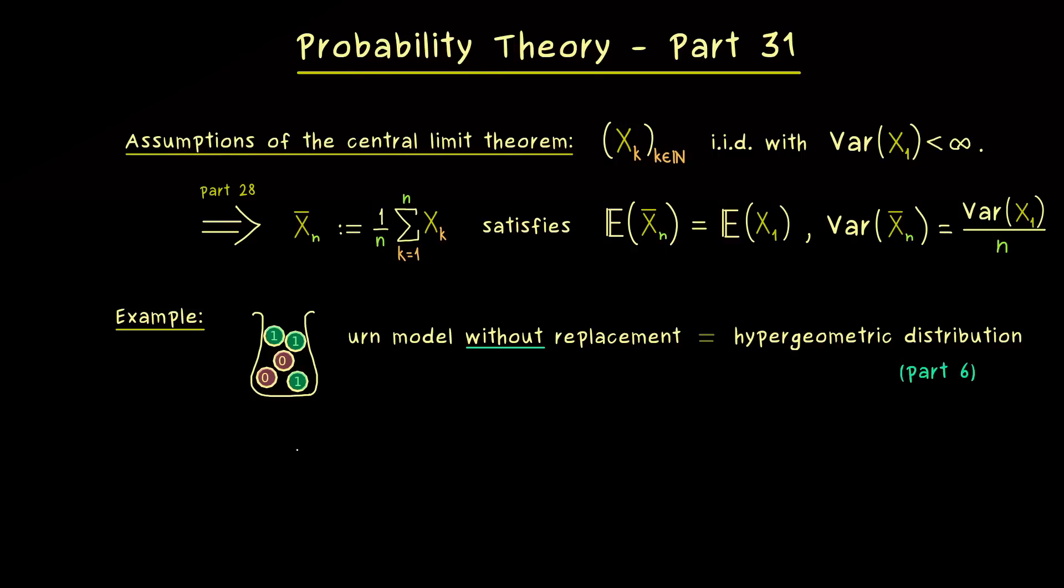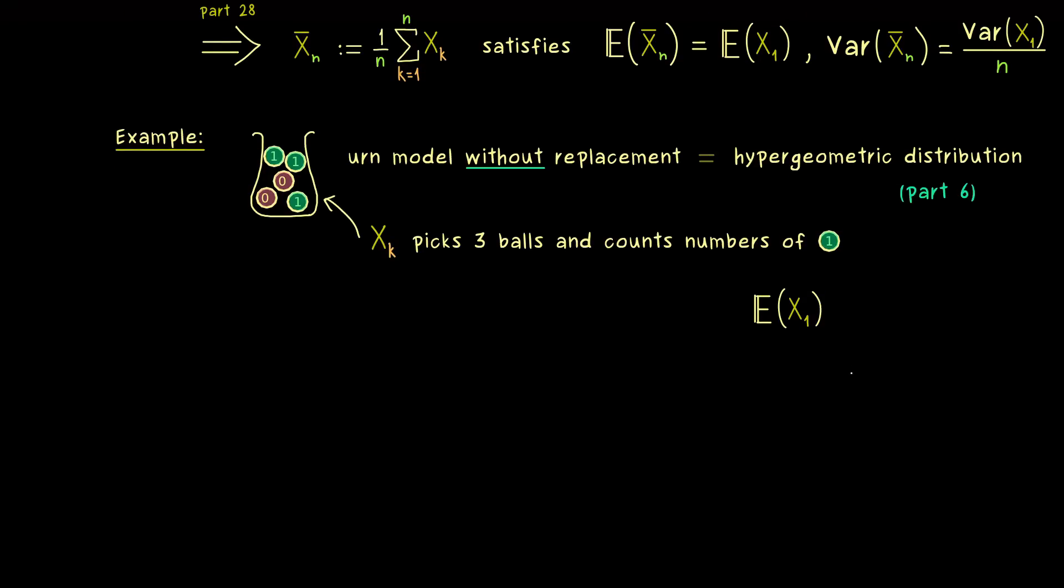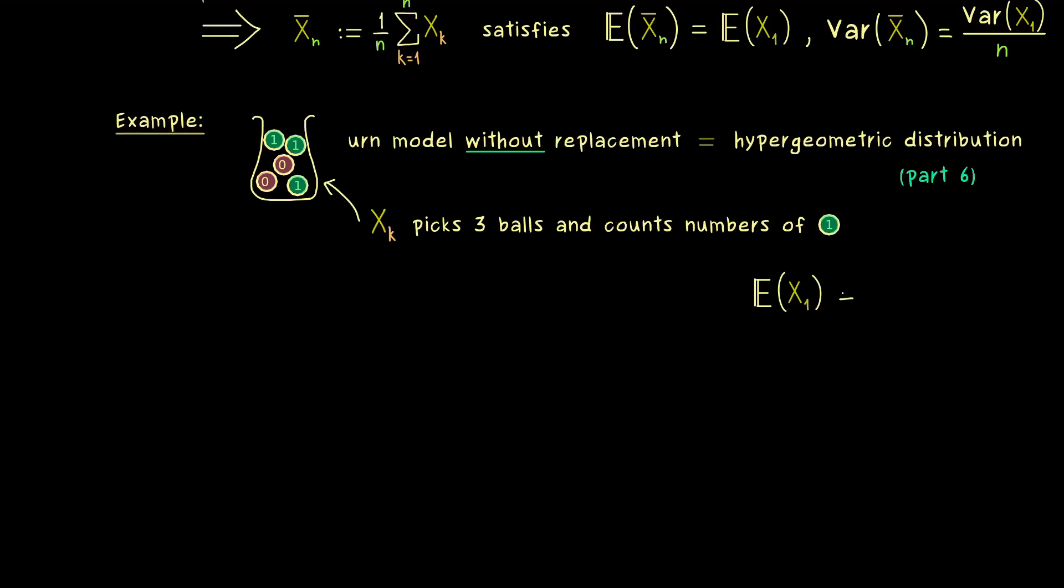Ok, let's keep it simple for this example. Let's say we have these five balls and we pick three. So this means, each random variable xk we consider here is described by this sentence, where we pick three balls and count the number of ones. And here, if you know the hypergeometric distribution, you might know how to calculate the expectation. Here I will skip the calculation and just tell you, it should be 9 over 5, or by using decimal numbers, we have 1.8.